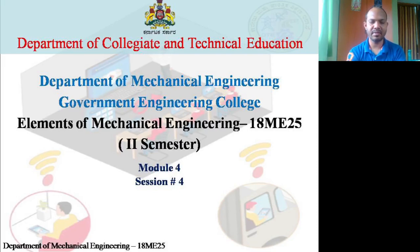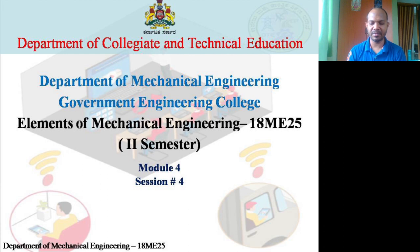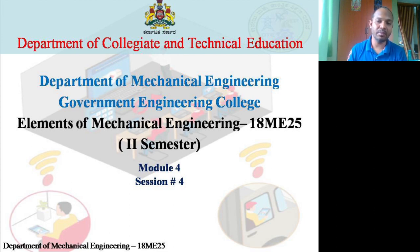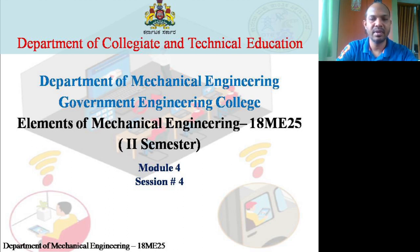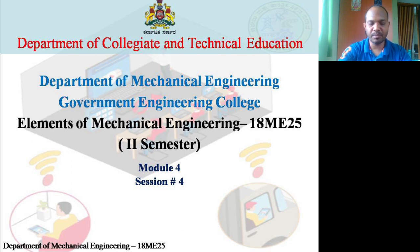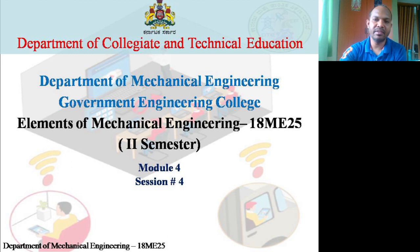Welcome to the fourth session of the fourth module. In the previous module we discussed different types of joining processes — soldering, brazing, and welding. These three processes have their own importance in the field of electronics, mechanical engineering, and domestic applications. Before discussing the differences, it is important to know on what basis soldering, brazing, and welding are carried out.